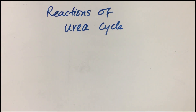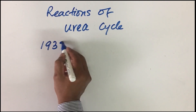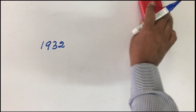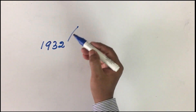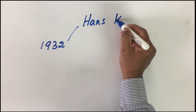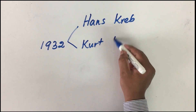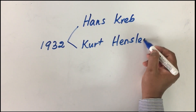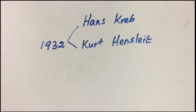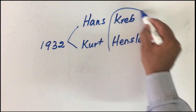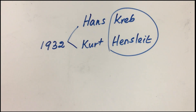The urea cycle is the first known metabolic pathway to be elucidated — it was in 1932 — by two very famous scientists: Hans Krebs, the same scientist who elucidated the TCA cycle, and Kurt Henseleit. Therefore, the urea cycle is also known as the Krebs-Henseleit cycle. It consists of totally five steps.